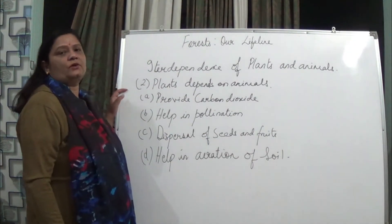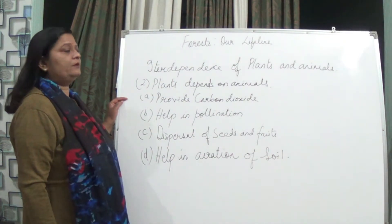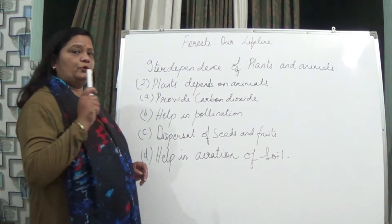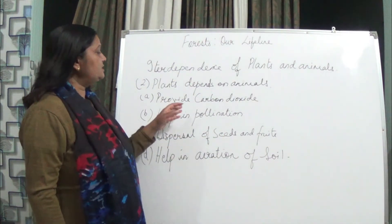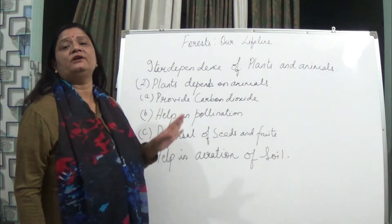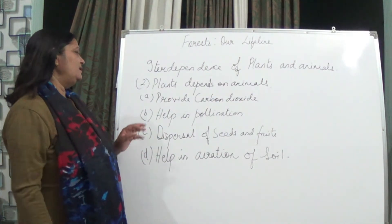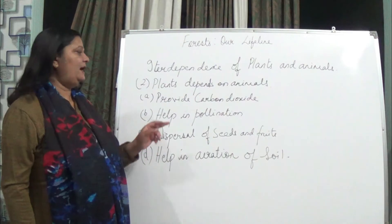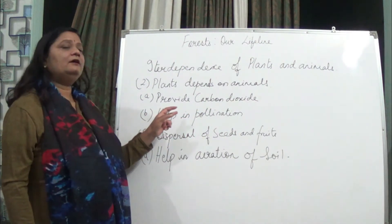Now, how do plants depend on animals? Plants require carbon dioxide for the process of photosynthesis, and animals give out carbon dioxide during respiration. This carbon dioxide can be taken up by plants to prepare their food. Animals also help in pollination — butterflies and small insects feed on the nectar of flowers and move from one plant to another, thereby pollinating them.